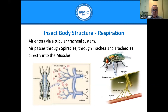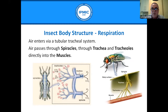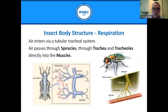Air enters the spiracles, passes through the tubular trachea, and into finer tracheoles that connect directly with the muscles. While the exoskeleton is highly resistant, the spiracles represent a weakness. When treated with insecticide, this is the quickest and most direct route for neurotoxin to be taken in through to the muscles, resulting in fast, effective treatments. Similarly, diatomaceous earth drawn into the spiracles will rapidly dry out the tracheal tubes and result in rapid death.